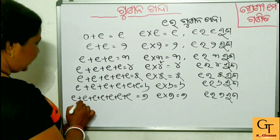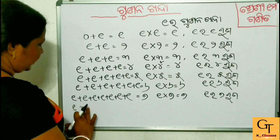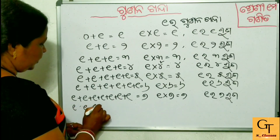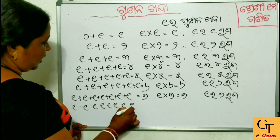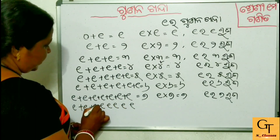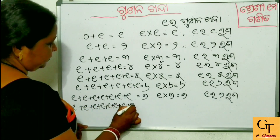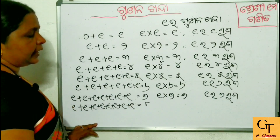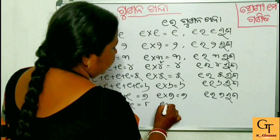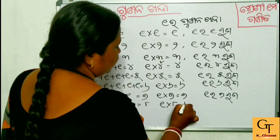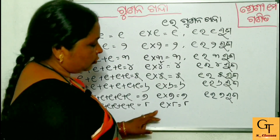So the same thing is 8. 1, 2, 3, 4, 5, 6, 7, 8. Then the same thing is 8. So the same thing is 8. The same thing is 8.